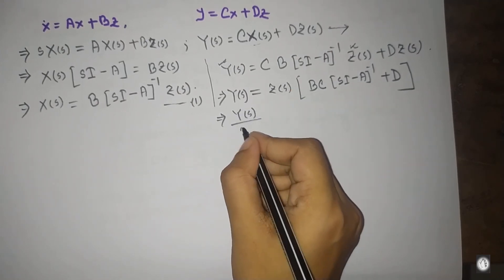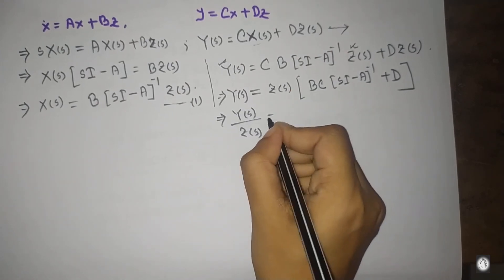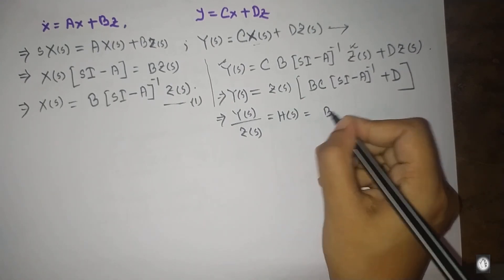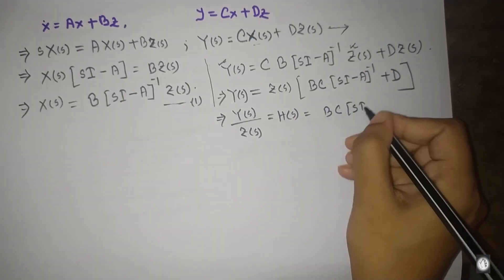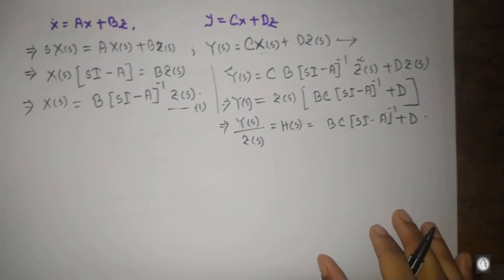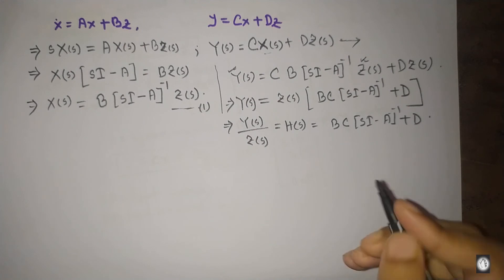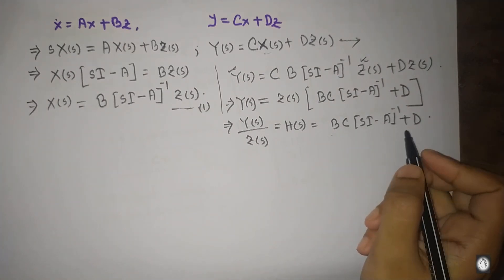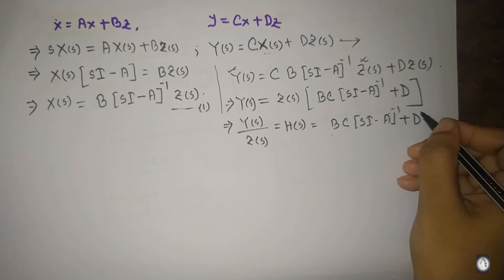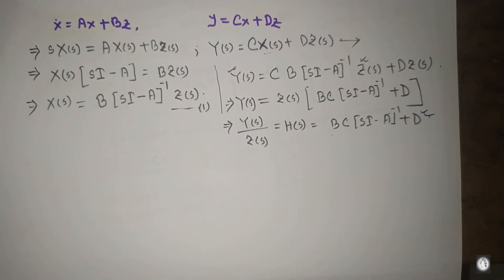The transfer function of a system is y(s)/z(s) = BC(sI - A)^{-1} + D. For a connective system, this transfer function equation allows us to represent the system. If there is a connective circuit or connective system, state variables are used to analyze the system completely. Thanks for watching this video.